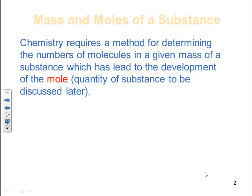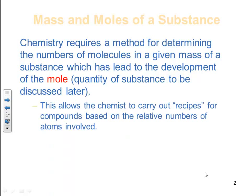It's kind of like a dozen — a dozen is 12 items. When we say a mole, we mean a certain quantity of items. This allows the chemist to carry out recipes for compounds based on relative numbers of atoms involved. It simplifies calculations; it's easy to deal with a bulk number instead of individual atoms or molecules. It's kind of like cooking for five versus cooking for 100 — if we know the recipe for five, we just multiply by 20 to upscale it to 100 people.